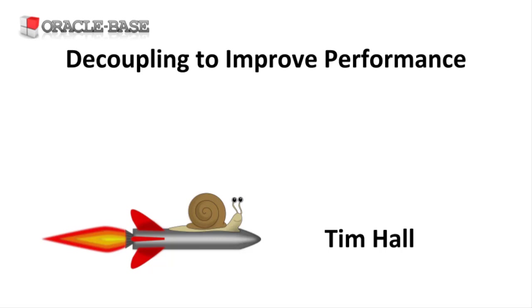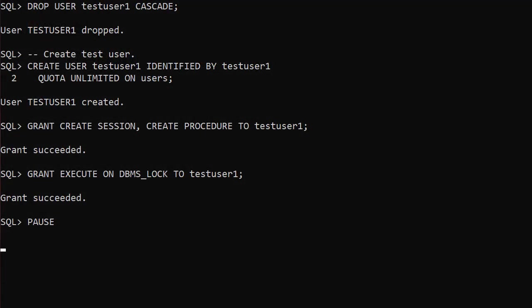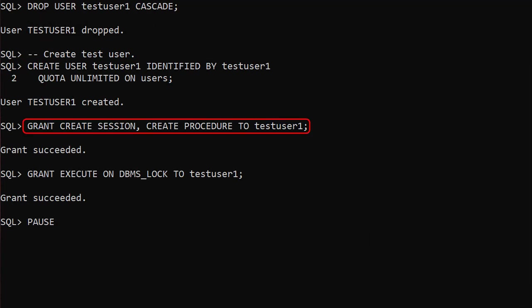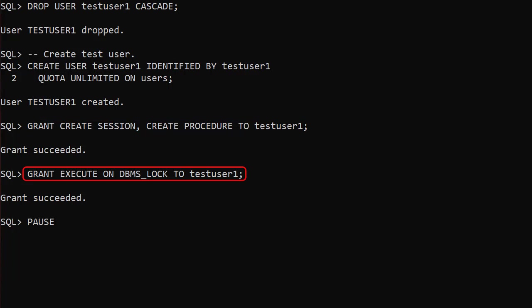Let's work through an example of decoupling. I'm going to use PL/SQL and Oracle Advanced Queuing, but you could solve the same problem with any programming language and message queuing system. We create a user called testuser1 and grant it the create session and create procedure privileges. We also give it access to the DBMS_LOCK package so we can use the sleep procedure. If you're using Oracle 18c or above you can use the sleep procedure in the DBMS_SESSION package instead.